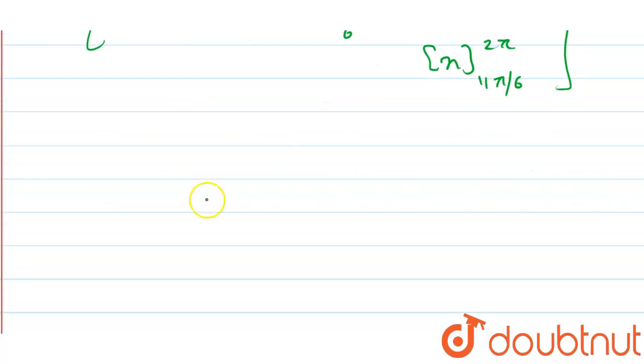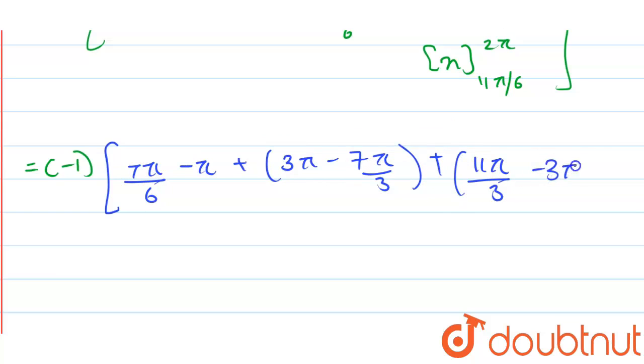Now we are just going to put the limits here. So after putting the limits you will get minus 1 times 7 pi by 6 minus pi, plus 3 pi minus 7 pi by 3.